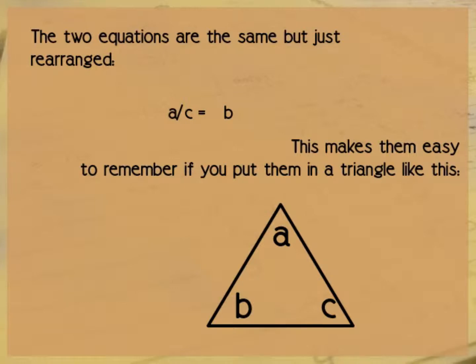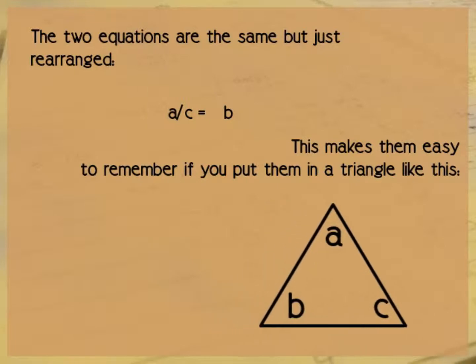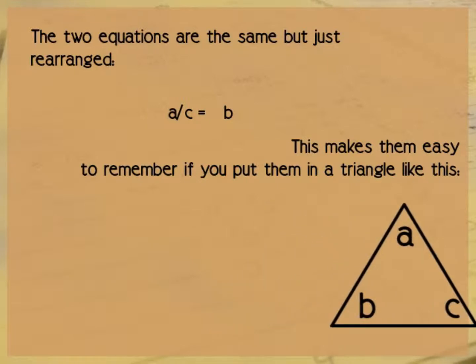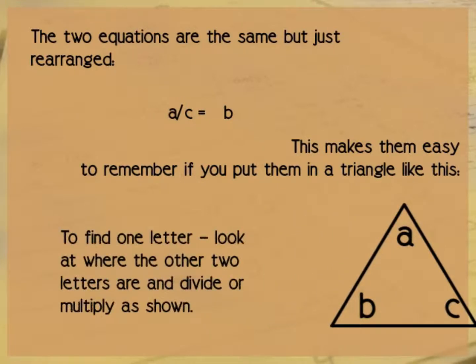You just put one letter at the top, always the same letter at the top, very important. And then you have the other two letters at the bottom of the triangle. And to find one letter, you look at where the other two letters are, and you divide or multiply just like this.